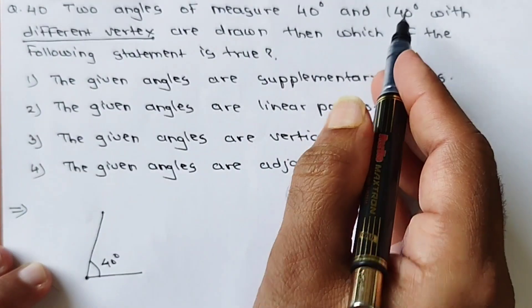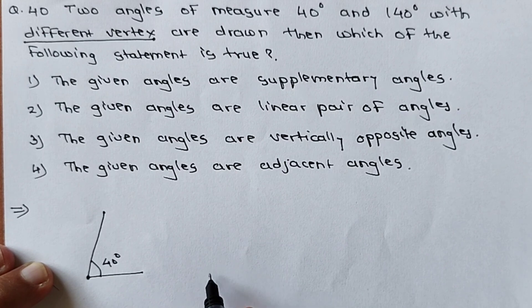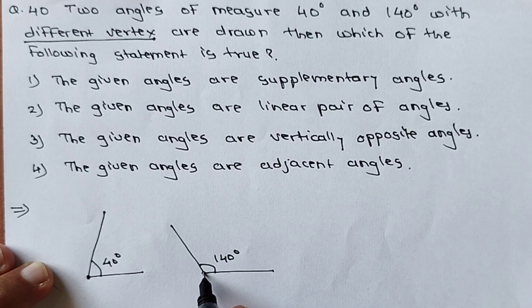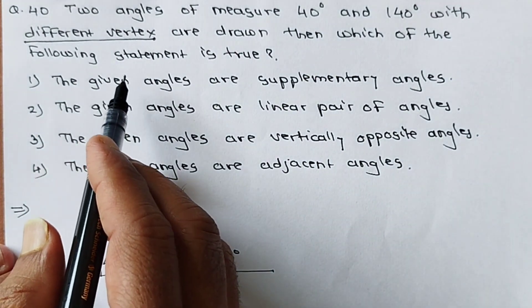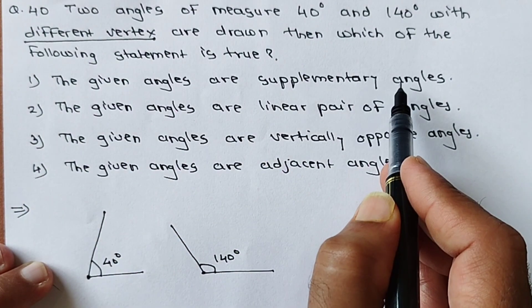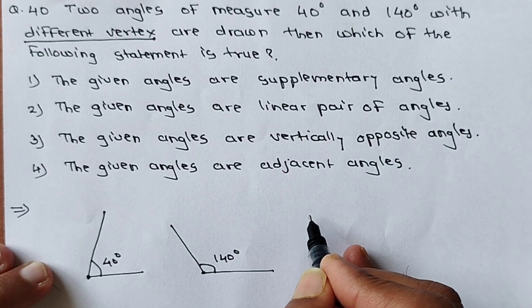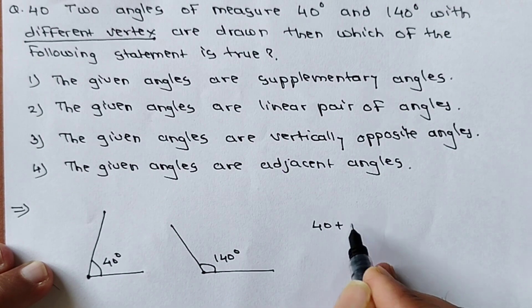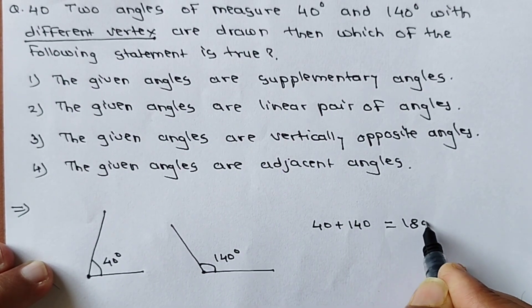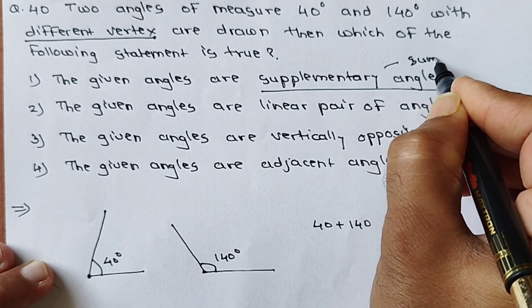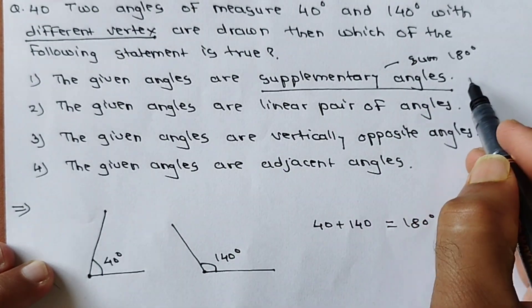First statement: the given angles are supplementary angles. Supplementary angle means the sum is 180 degrees. Here 40 plus 140 equals 180 degrees, so this condition is satisfied. The angles are supplementary.